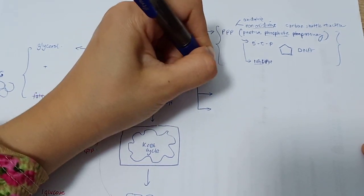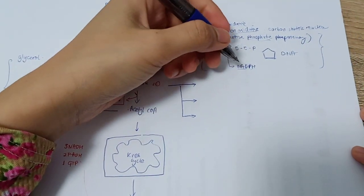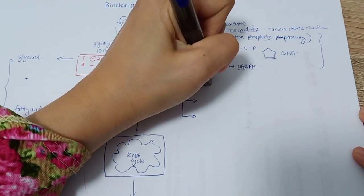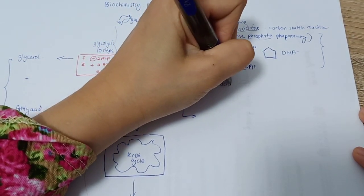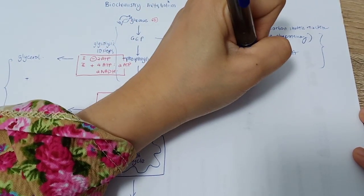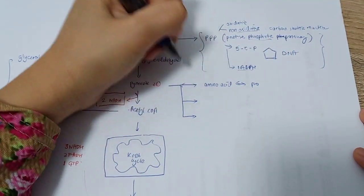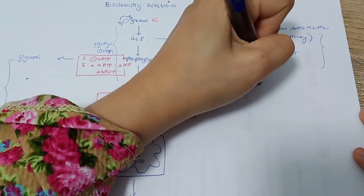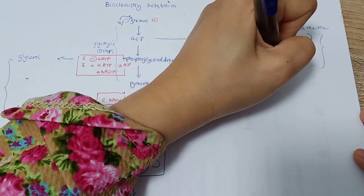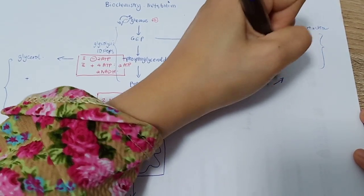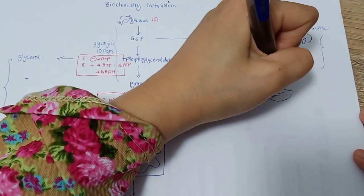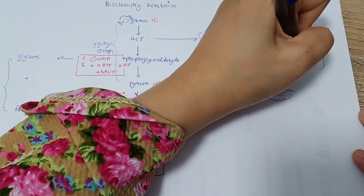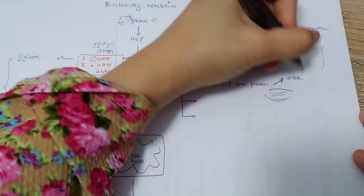It can become amino acids, and amino acids subsequently can produce protein. This is a reversible process. If it's too much, it can be stored in the muscle, or if it's too much, then it can be secreted as a form of urea.